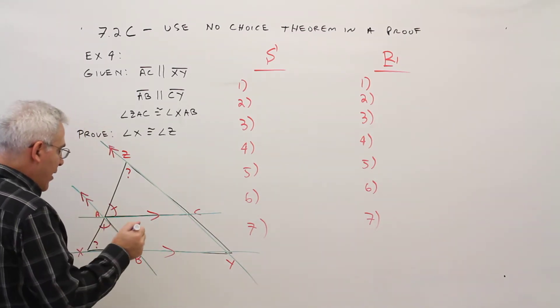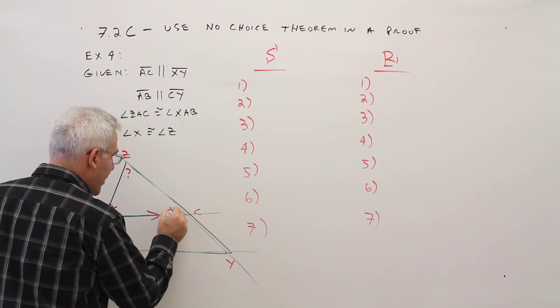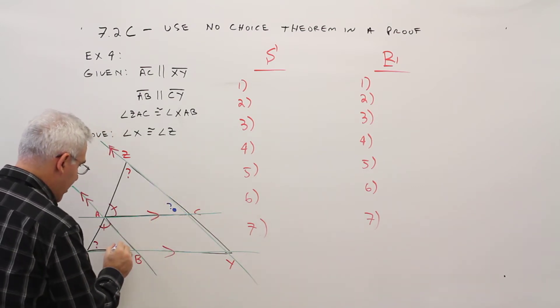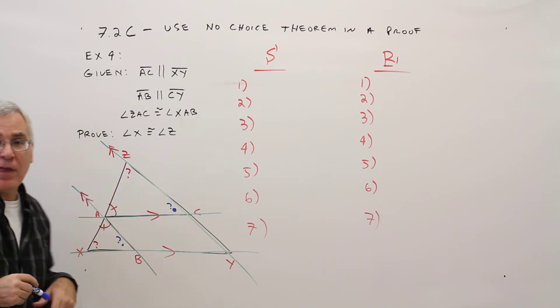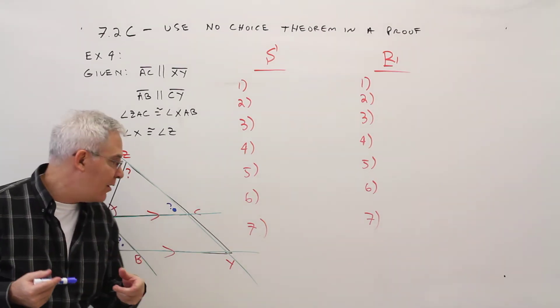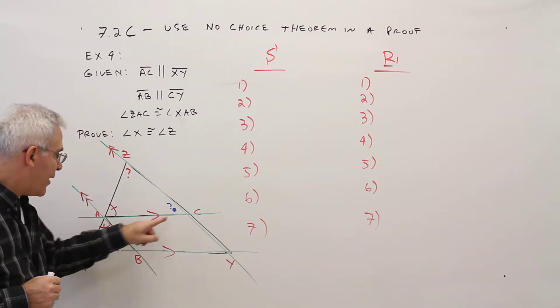So really, if I could somehow get this angle to be congruent to that angle, then I would be able to get my ultimate angles congruent. So now this becomes my focus.